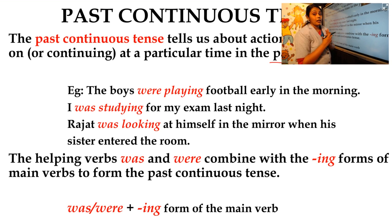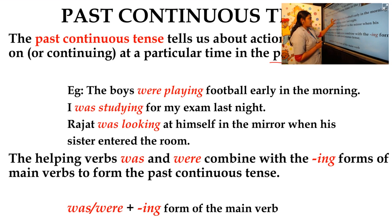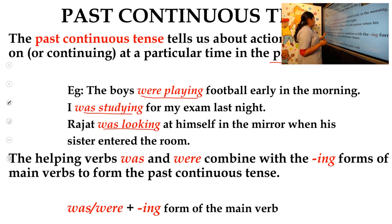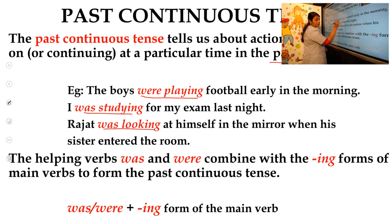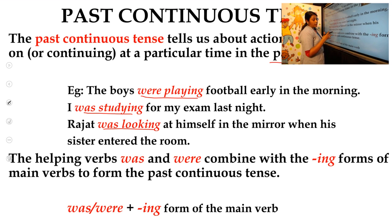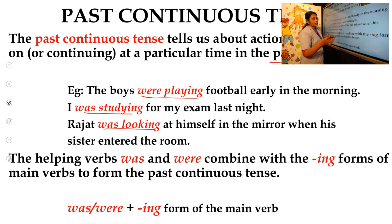In simple past tense we use the past form of the base verb. But in past continuous tense, we use a helping verb combined with the ing form of the main verb. The teacher has marked this in red. Here 'play' is the main verb, so we use play plus ing — 'playing' — along with the helping verb 'was' or 'were'. That is the past continuous tense form.